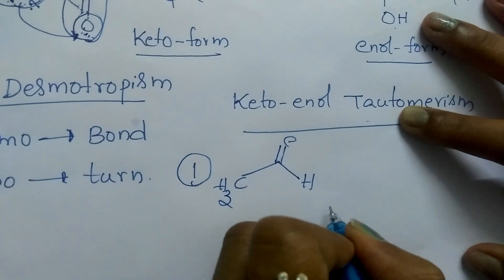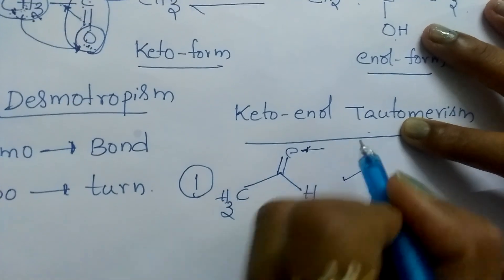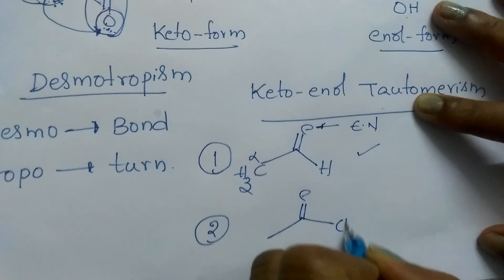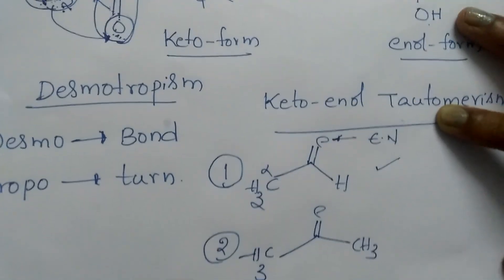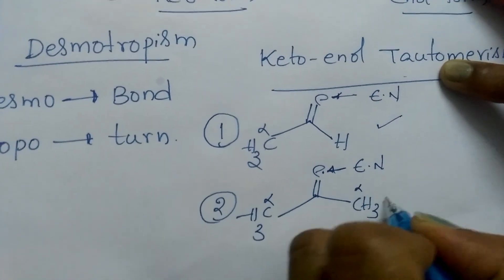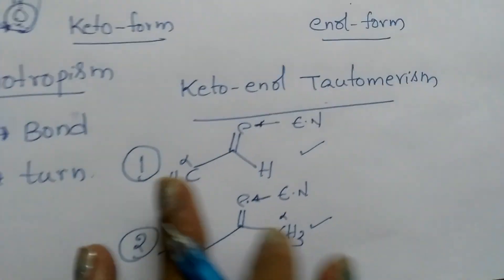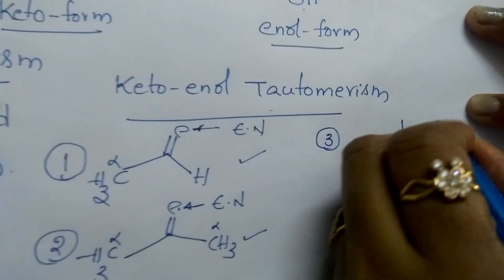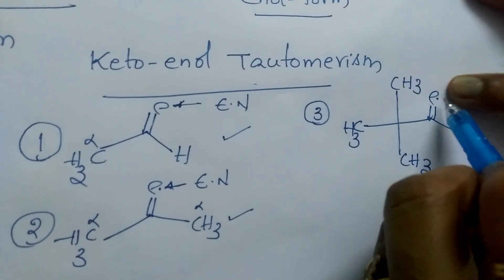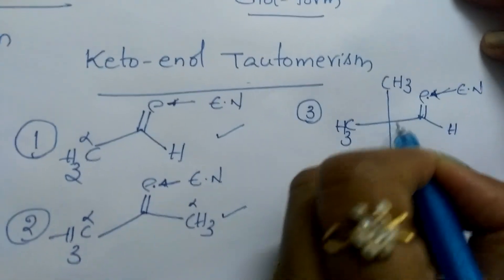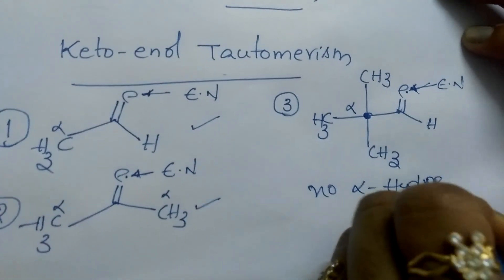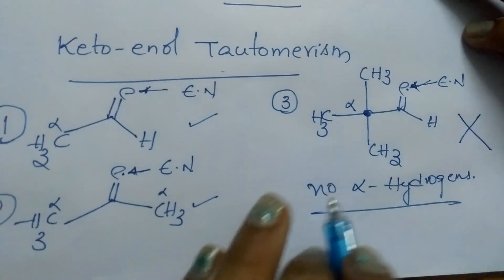This compound exhibits tautomerism because the first condition is satisfied — it has an electronegative atom bonded through a multiple bond — and it has alpha hydrogen. This example also exhibits tautomerism: it has an electronegative atom bonded through a multiple bond and it has alpha hydrogen. However, if you see this example, it has a multiple bond and an electronegative atom, and it does have an alpha carbon, but it does not have alpha hydrogen — no acidic hydrogens — so this compound does not exhibit tautomerism.